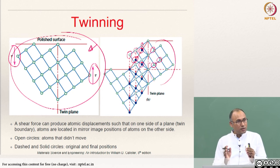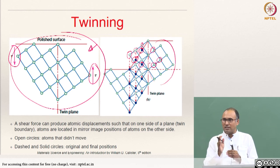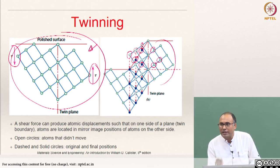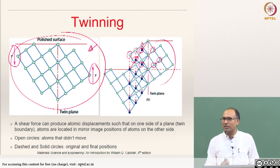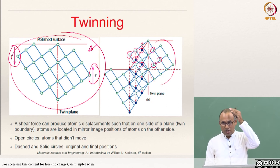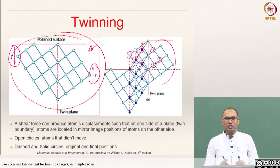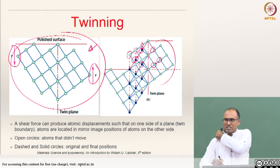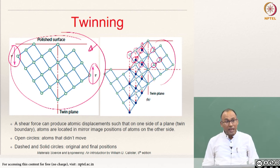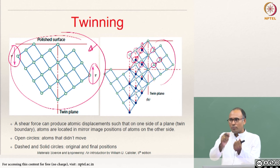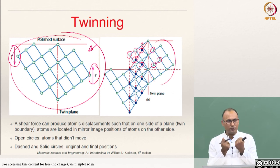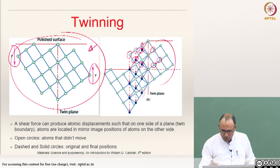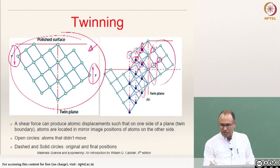The atom motion is such that across the twin plane you always find mirror images of atoms from one side to the other. If motion is of that kind, such a deformation mechanism is called twinning. Like shear by glide of a plane of atoms, here a plane of atoms moves so that they become mirror images of atoms on the other side of the twin plane.